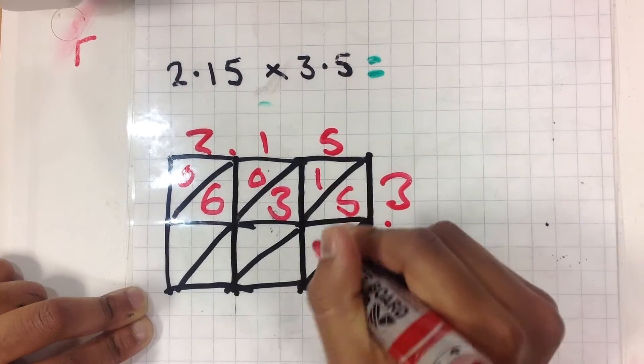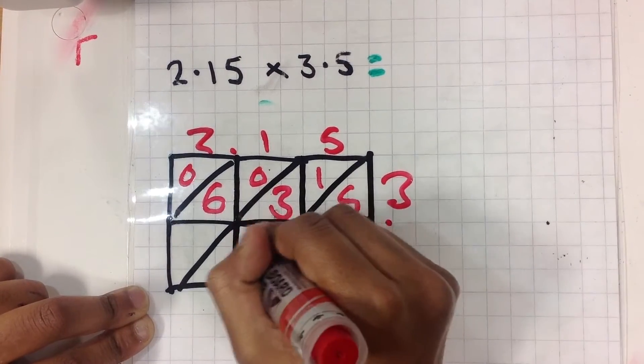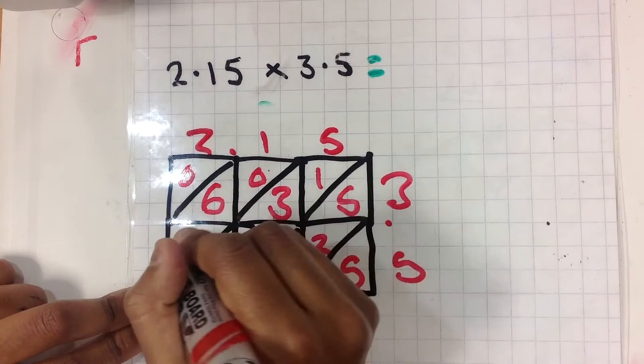5 times 5 equals 25. 5 times 1 equals 5. 5 times 2 equals 10.